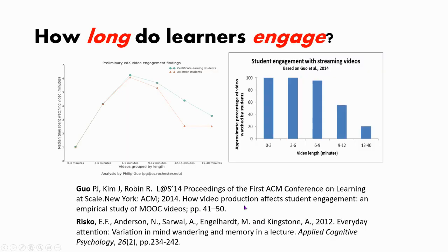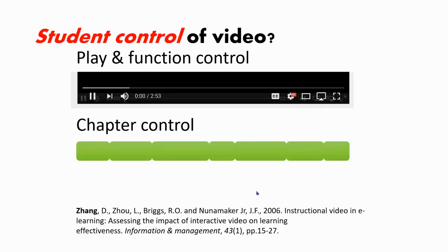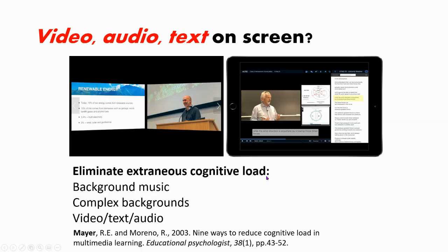Now the research — how long do learners engage? They say it's around six minutes. You really should be keeping your videos six minutes or shorter if you can. Allow them control: the very fact that you can pause and rewind, change the speed — those are great controls — but if you have chapter control in the tool, that's valuable too.